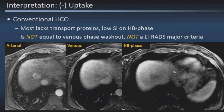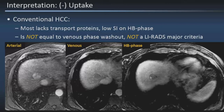Conventional hepatocellular carcinomas mostly lack the appropriate transport proteins, so these show up as low signal intensity on the hepatobiliary phase. This is a classic HCC in the right hepatic dome with arterial hyperenhancement, venous phase washout with a capsule-like enhancement, and low signal intensity on the hepatobiliary phase. It's very important to realize that lack of uptake on the hepatobiliary phase is not the same as venous phase washout, which adds tremendous specificity to the diagnosis of HCC. Therefore, hepatobiliary phase lack of uptake does not define a LI-RADS major criteria but rather an upgrade feature.